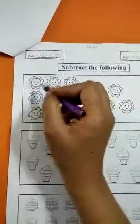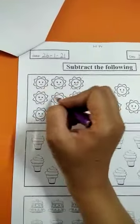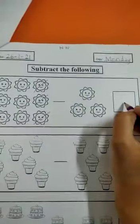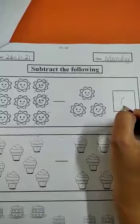1, 2, and 3. I have cut 3. And how many left? 1, 2, 3, 4, 5, 6. So we have to write 6 over here. Okay? How many are left? 6.